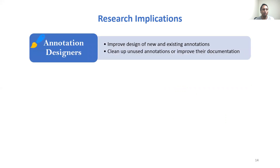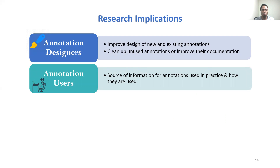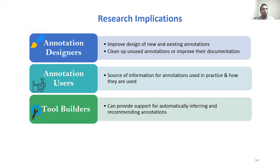Our research generates various findings with several actionable implications for practitioners and researchers. Annotation designers can use distribution metrics to improve the design of new and existing annotations, and can clean up unused annotations or improve their documentation based on adoption frequency. The results also help annotation users by serving as a source of information for best practices. We also found that some frequently used annotations can be directly or indirectly inferred and recommended by Android Studio, so tool builders can provide support for automatically inferring and recommending annotations.